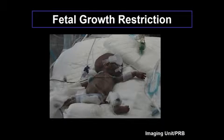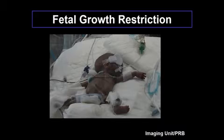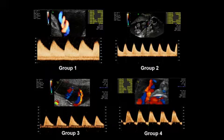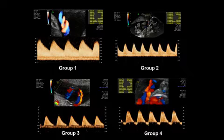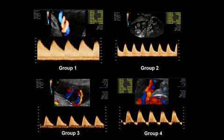We have fetal growth restriction, but not all these babies are the same. We use umbilical artery Doppler to define which ones have a higher or lower risk. Putting everything into one bag is probably not the best way to analyze this data. Following a proposal by Professor Karen Marsal: group one is small for gestational age with normal umbilical artery; group two has increased pulsatility index but still diastolic flow; group three is absent diastolic velocities; group four is reversed diastolic velocities. These are not the same.